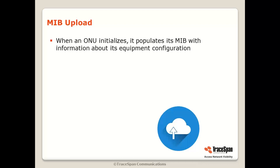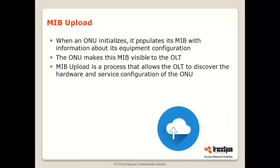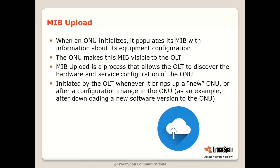So where does MIB upload fit in? When an ONU initializes, it populates its MIB with information about its equipment configuration and makes this MIB visible to the OLT. MIB upload is a process that allows the OLT to discover the hardware and service configuration of the ONU. It is initiated by the OLT whenever it brings up a new ONU — meaning an ONU the OLT has not seen before — or after a configuration change, such as downloading a new software version. The OLT needs to learn the ONU's configuration and capabilities before making any settings.